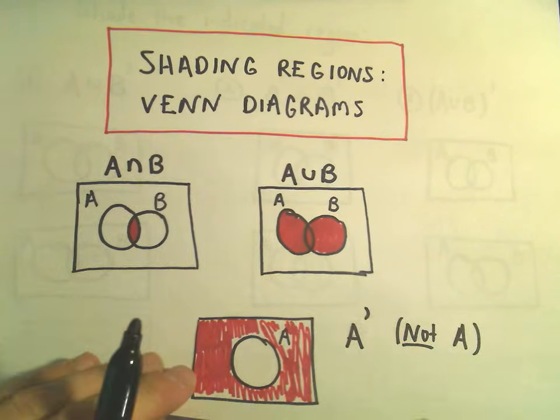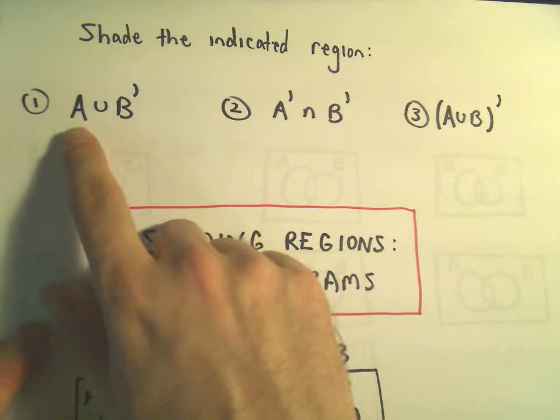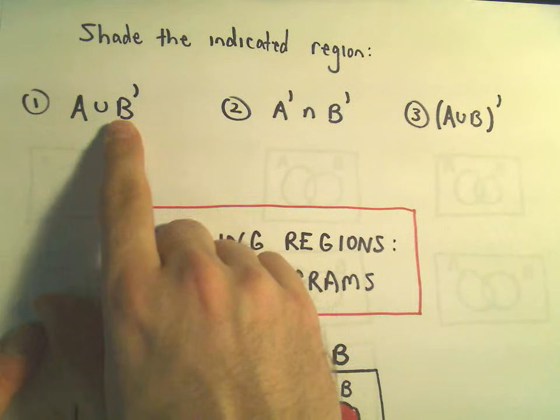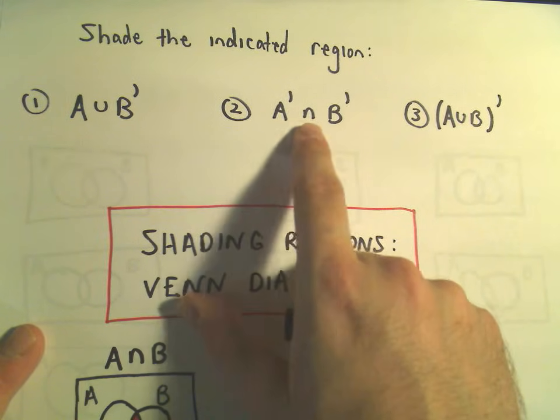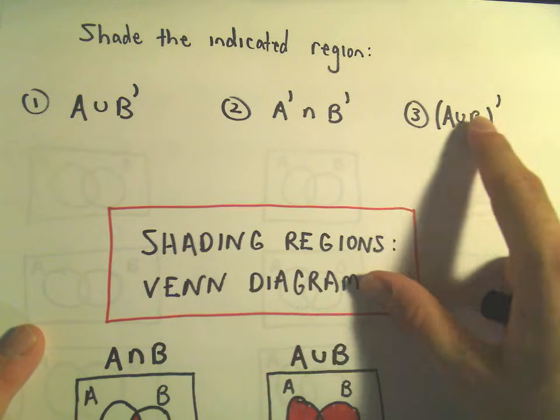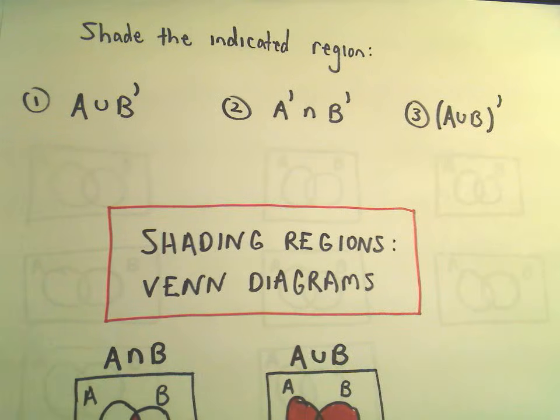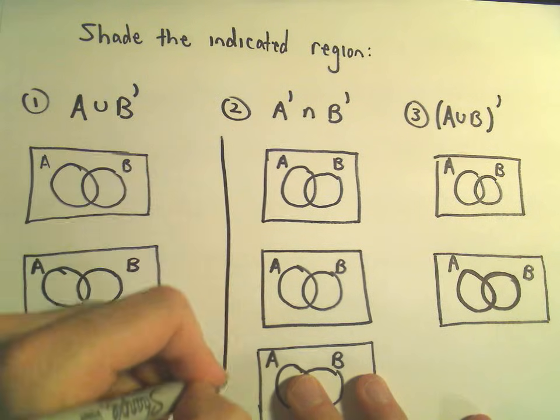So, let's take a few examples here. I'm going to shade, in each case: in the first example, A or NOT B. In the second one, I'm going to shade NOT A AND NOT B. And in the third one, I'm going to shade NOT A or B. So a little confusing. I've got a bunch of little diagrams here because I think it's a good idea sometimes to do them just a little bit at a time.